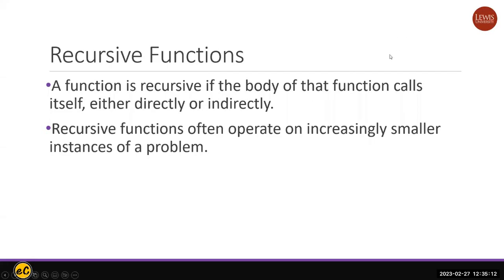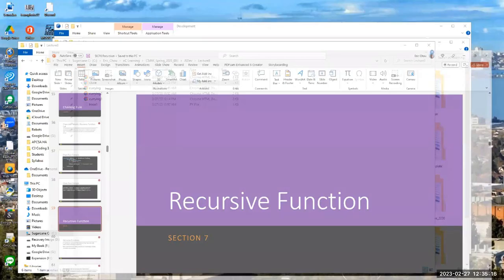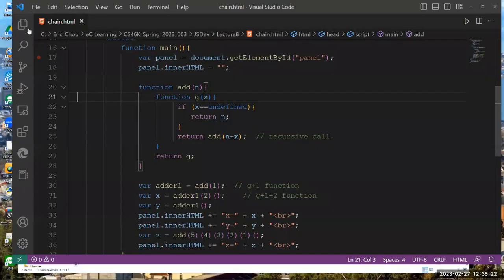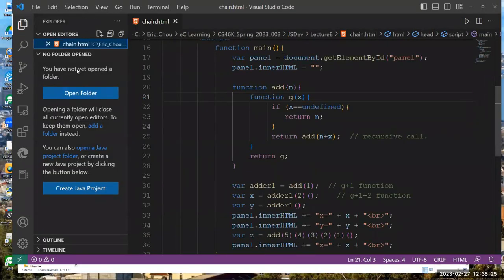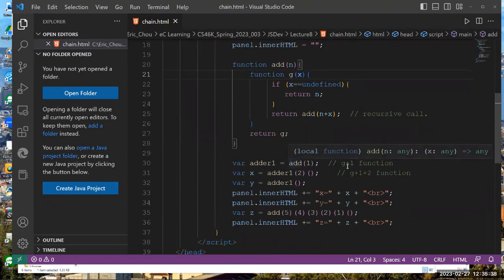This is the chain rule. Let's actually look at how this chain rule works in our JavaScript. Here I do have a function called chain.html in the same directory that we have. So this adder(n) and then g, if X is undefined, you don't do it. Here we use adder(n).